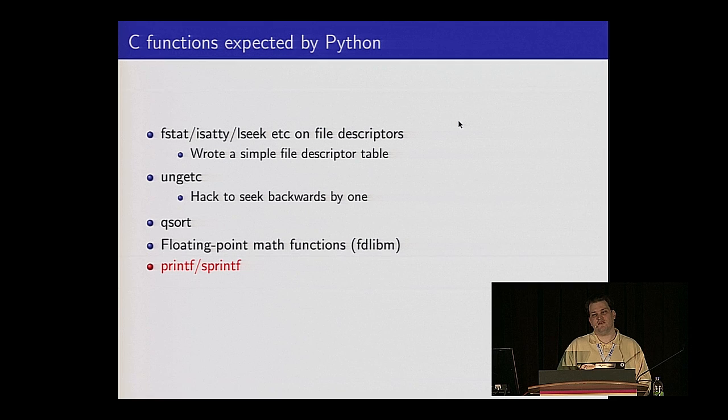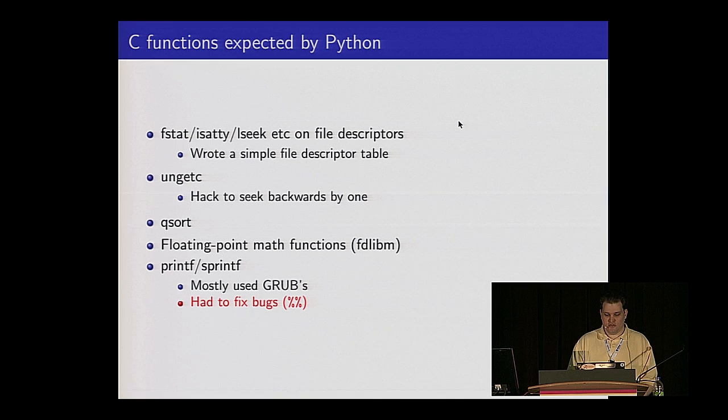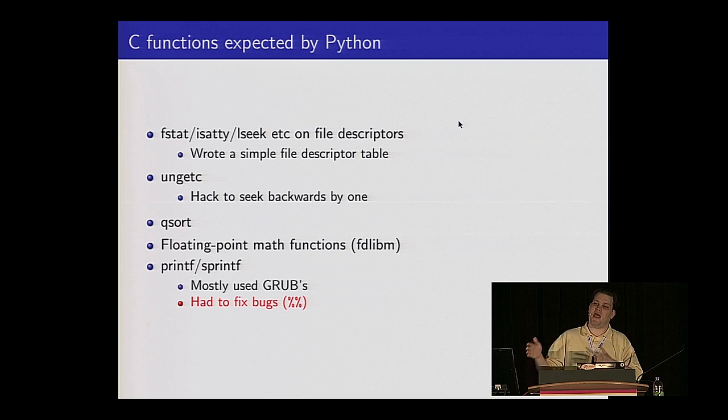We also needed printf and sprintf — Python uses those pretty extensively. For the most part we could use Grub's implementation for some basic functionality, but we did have to extend it for a few things. For example, it didn't have the %% escape to put a percent in the final format string. And Python actually uses this to create a format string and then run that back through printf whenever you use the percent operator on the Python command line. Until we figured out we didn't have this, we had some very interesting bugs.